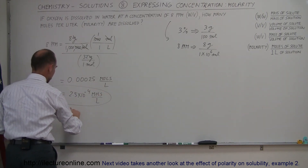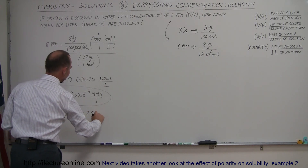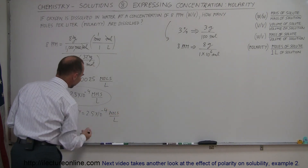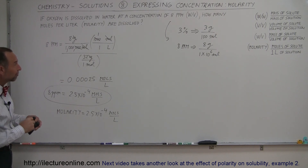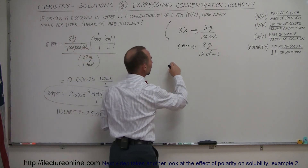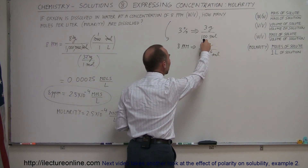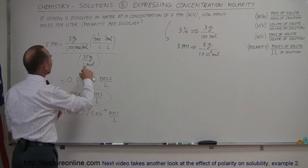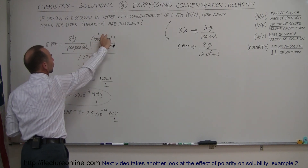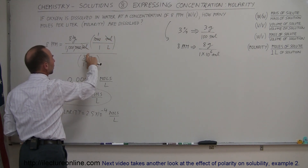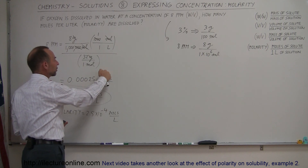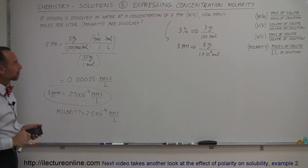So the molarity equals 2.5×10⁻⁴ moles per liter. That's fairly straightforward. Always recognize what units you're starting with — 8 parts per million means 8 grams per million milliliters. Then convert milliliters to liters and divide by the molar mass (32 grams per mole for oxygen), which automatically converts to moles per liter. That's how you determine molarity from a parts-per-million concentration.